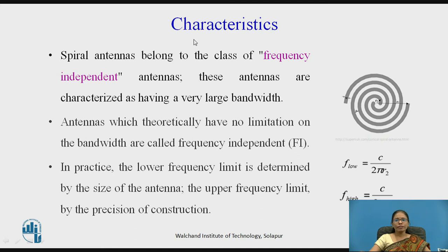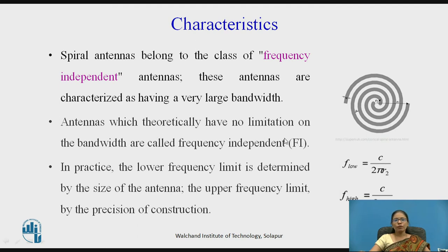Let us see the characteristics of spiral antenna. Spiral antennas belong to the class of frequency independent antennas. Frequency independent antennas are characterized by a very large bandwidth. Their parameters remain constant over a very large frequency range. Antennas which theoretically have no limitation on bandwidth are called frequency independent antennas. In practice, the lower frequency limit is determined by the size of the antenna and the upper frequency limit is determined by the precision of construction.